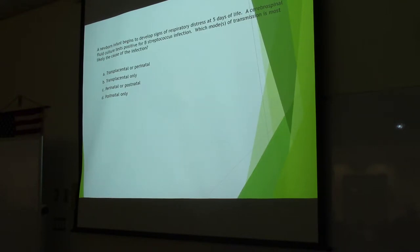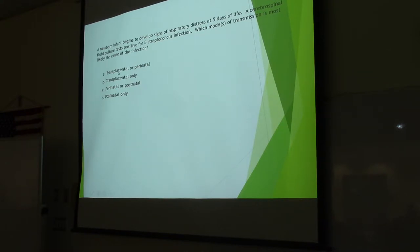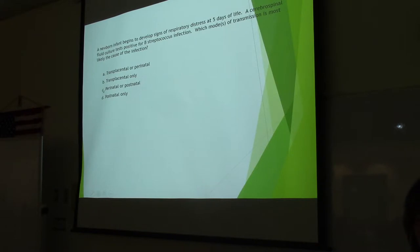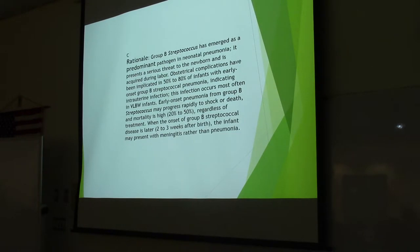A newborn infant begins to develop signs of respiratory distress at five days of life. A cerebrospinal fluid culture tests positive for beta streptococcus infection. Which mode of transmission is most likely the cause — transplacental, perinatal at the time of delivery, or postnatal? The answer is C, perinatal — so during or at the time of delivery. Group B strep has emerged as a predominant pathogen in neonatal pneumonia; it's a serious threat to the newborn and is acquired during labor.